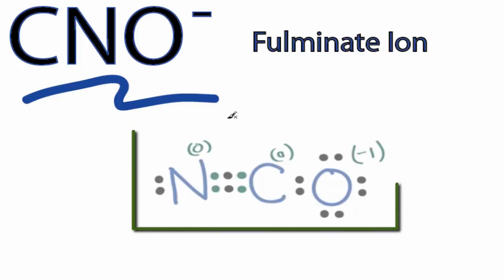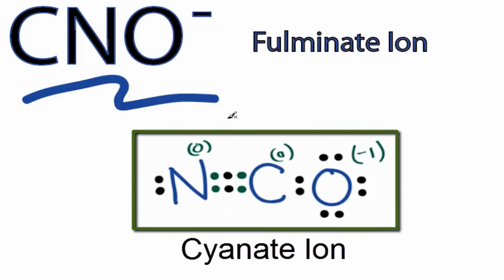So for the CNO minus Lewis structure, there really are two ways to draw it. The first is as the cyanate ion. According to the rules that we have for Lewis structures and taking into account formal charges, the cyanate ion is really the best way to draw this if you're just given CNO minus and told to draw a Lewis structure.